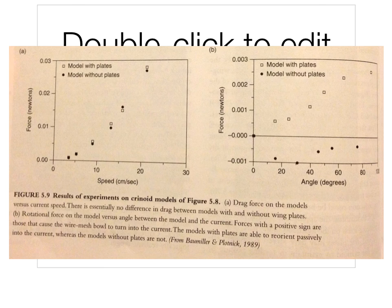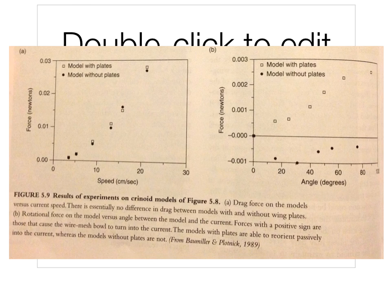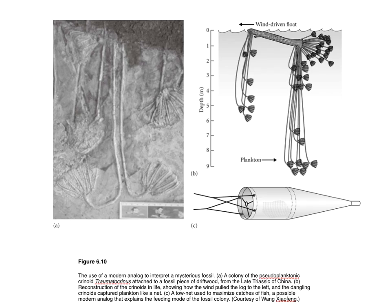Here are the results of the experiment. On the left-hand side, open squares are models with plates and closed circles are models without plates. Looking at speed on the x-axis and force against the plate on the y-axis, there's really no difference — no difference in drag between models with and without wing plates. But in the second graph, looking at angle versus force, there's quite a big difference. Forces with a positive sign are those that cause the wire mesh ball to turn into the current. Models with plates are able to reorient passively into the current and therefore get more food, whereas models without the plates are not. Via this experiment, they were able to show that it wasn't drag, but moving into the current that was actually the function of that big wing plate.